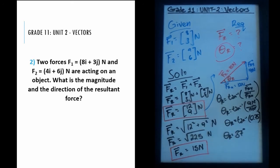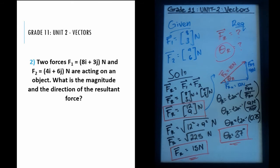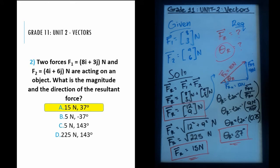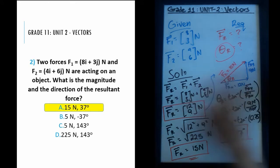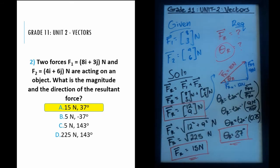The tan inverse of 0.75 gives 37 degrees. Note: if you're taking the national exam, you won't have a calculator, but sine, cosine, and tangent values are provided at the beginning of the exam. So the direction is 37 degrees. We have our magnitude of 15 Newtons and direction of 37 degrees, which matches the first choice. The second choice has negative 37 degrees, which would be a completely different direction.